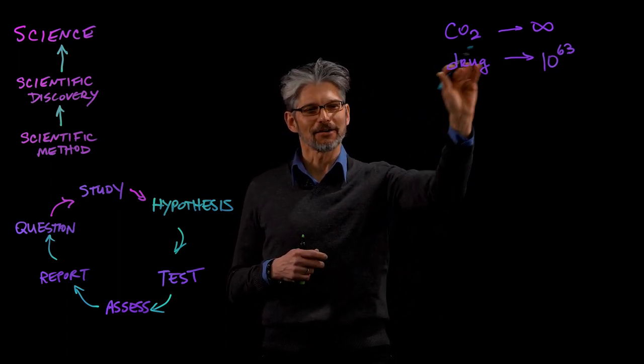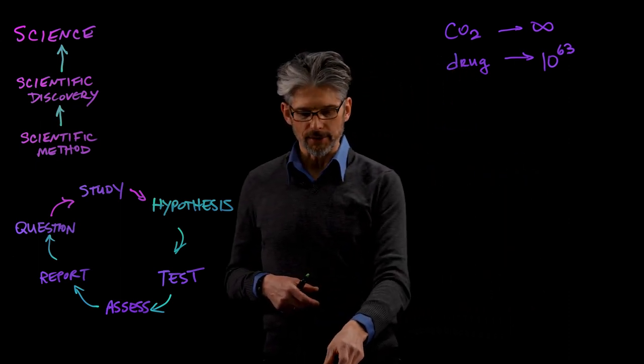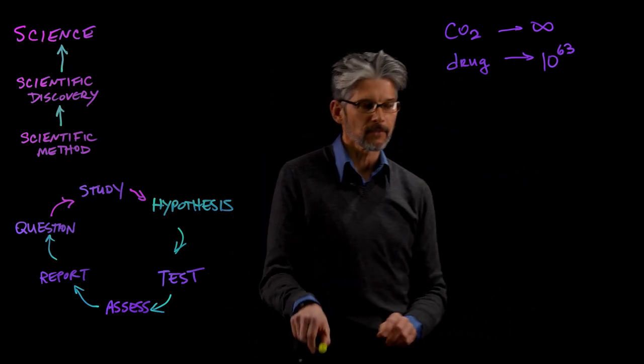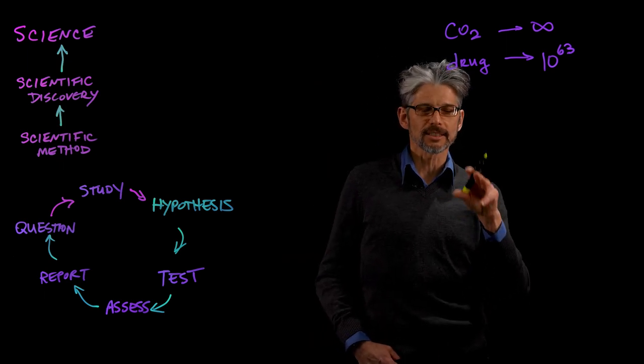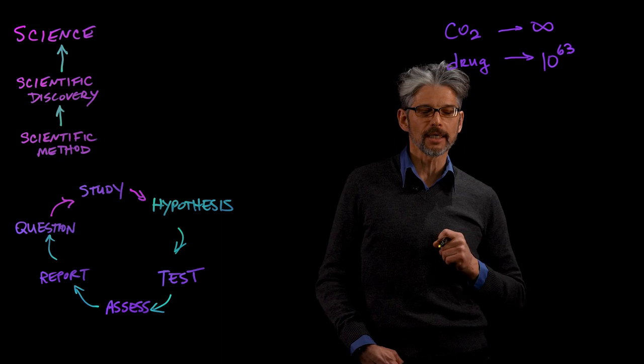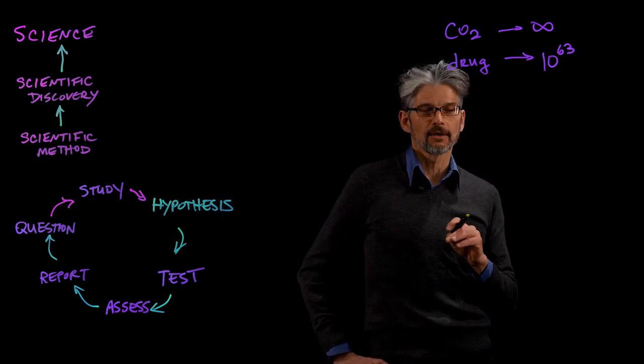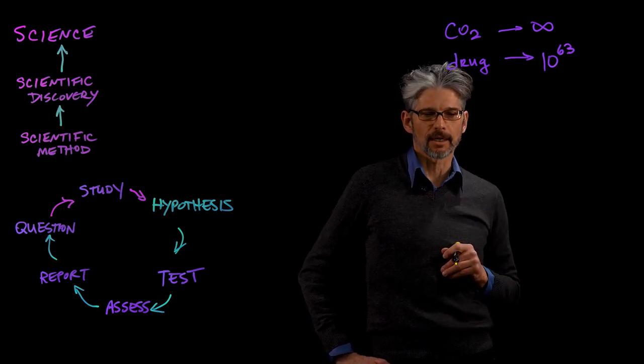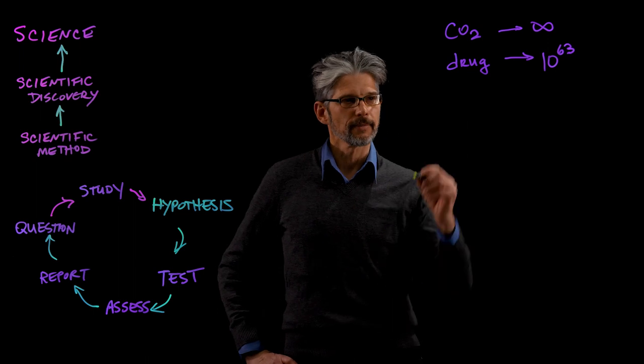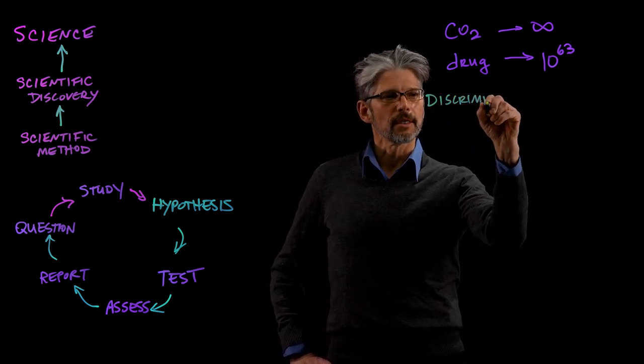This is where the generative models come in. So let's see how generative models work. Generative models are a type of AI model that essentially learns from training data how to be novel. Generative models are different from other discriminative type models that are commonly used in machine learning. So let's look at discriminative models and how they work.